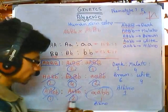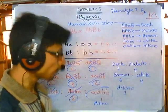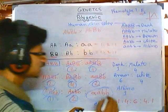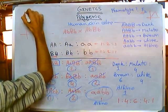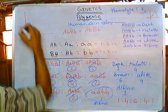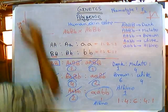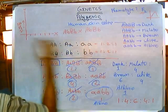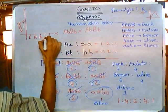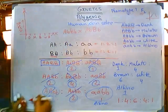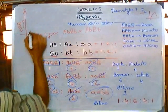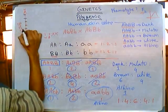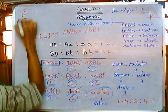Continuing: one dominant gives white, and counting those combinations gives 4. None dominant gives albino, which is 1. So the final phenotypic ratio is: dark : mulatto : brown : white : albino = 1 : 4 : 6 : 4 : 1. Now if you plot a graph with number of individuals on the Y-axis and skin color categories — dark, mulatto, brown, white, albino — on the X-axis...